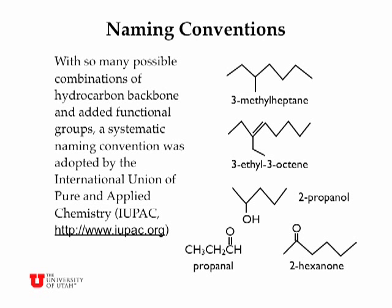Propanal is an aldehyde, and the base name is propanal because there are three carbons in this base chain. We don't need to number it, because if the C=O double bond were in the middle instead of the end, it would be a ketone instead of an aldehyde — so propanal is sufficient. Finally, 2-hexanone is a ketone with six carbons, and the carbon-oxygen double bond is located on carbon number two. You always count from the end that produces the smallest number when labeling the carbon atoms.